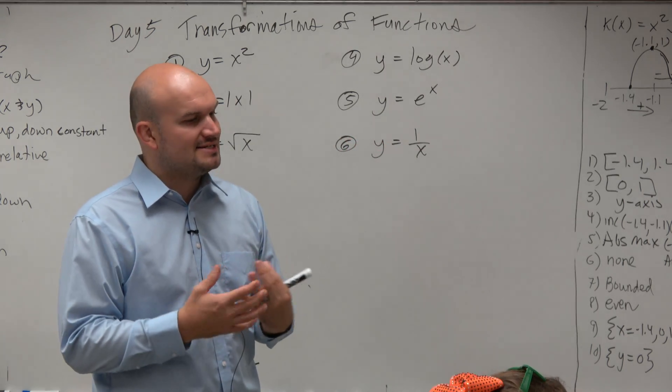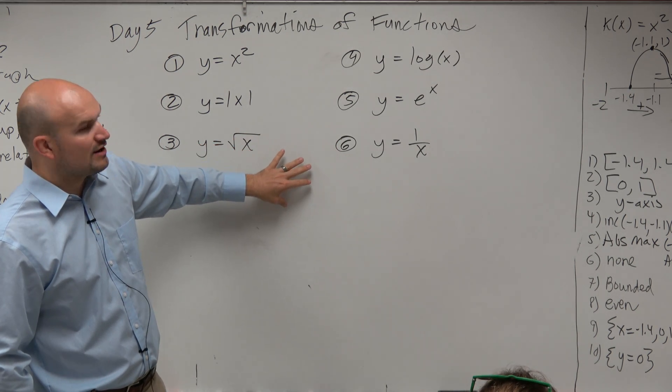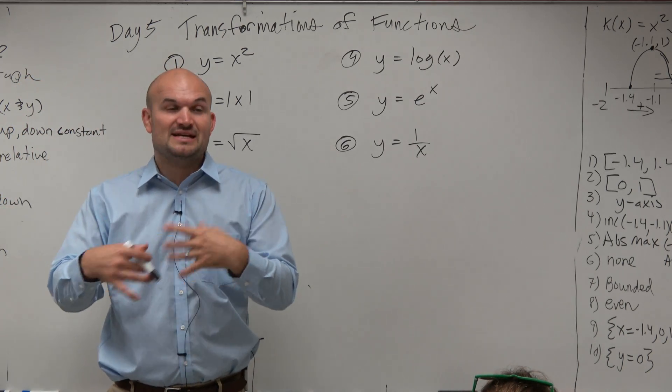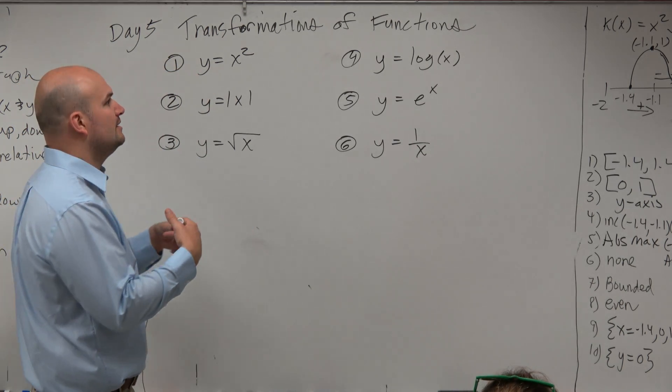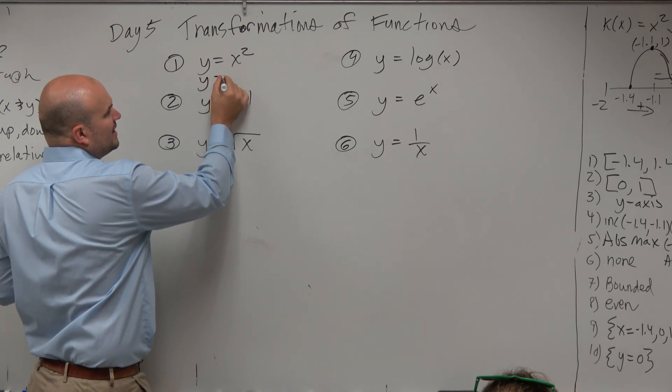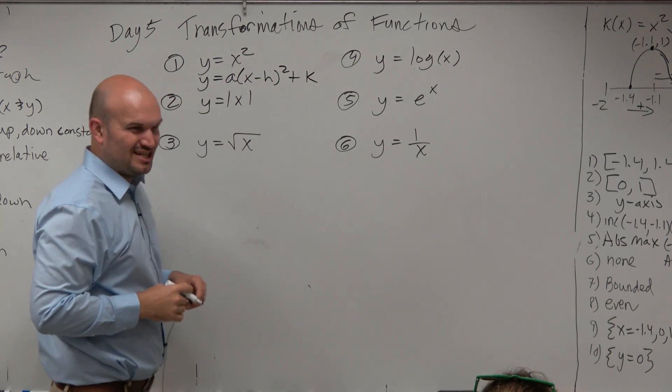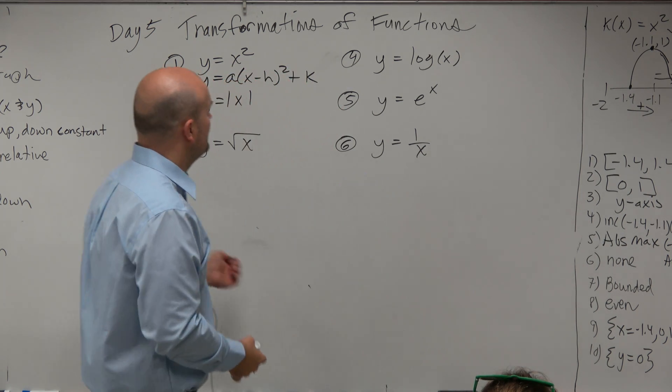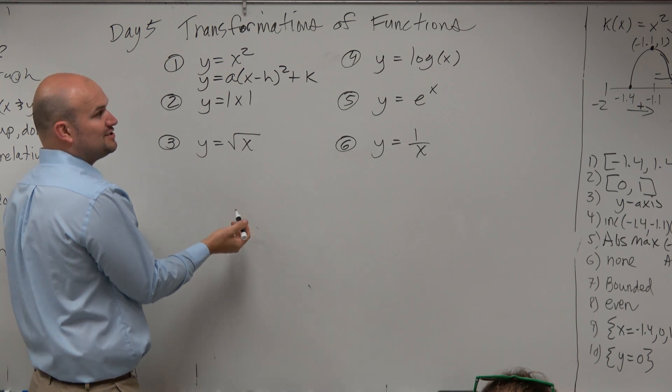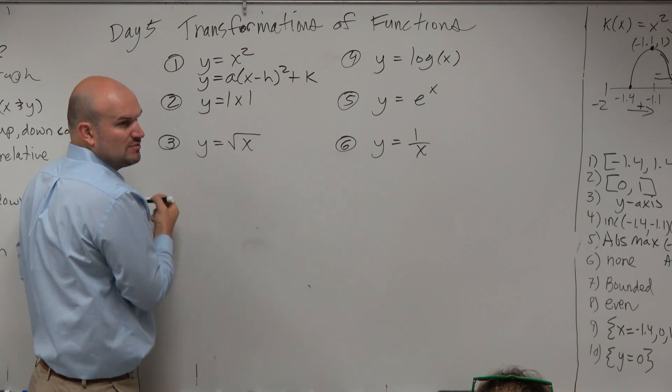Now what we did though is in Algebra 2 we really started getting away from using a table and really started using transformations. So what we did is we recognize that when we have these, these are what we call the parent graphs. And when we got away from the parent graphs what we looked at was the kind of transformations. Like how can we shift the graph based on how it, how the, what values are and change from the parent graph. So what we did is we created these values a, h, and k that basically affected our graph.